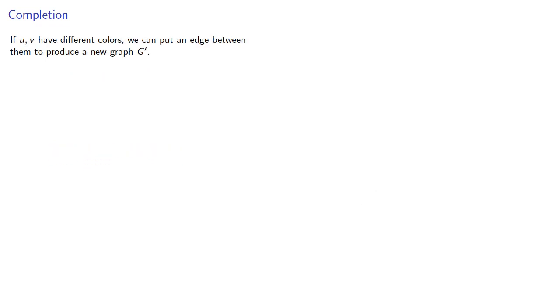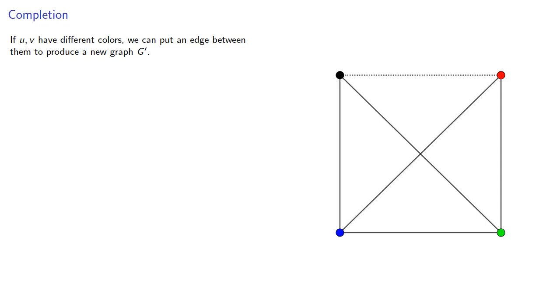If u and v have different colors, we can put an edge between them to produce a new graph, g star. And again, any coloring of g where u and v have different colors will also be a coloring of g.